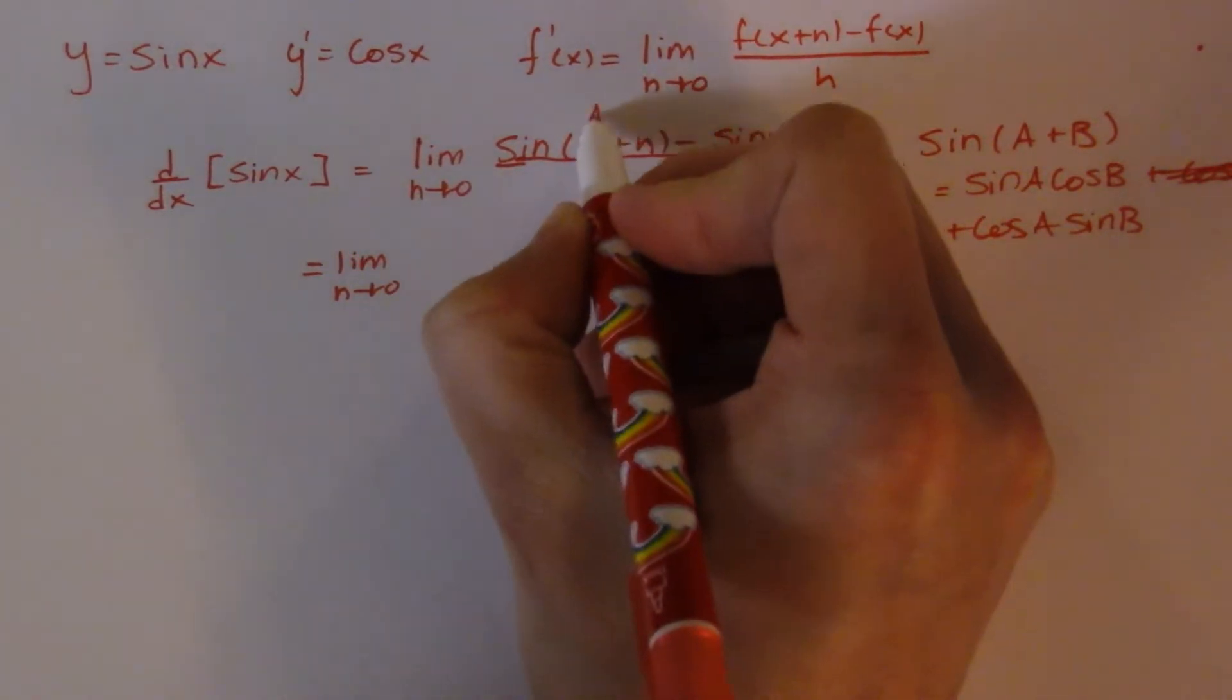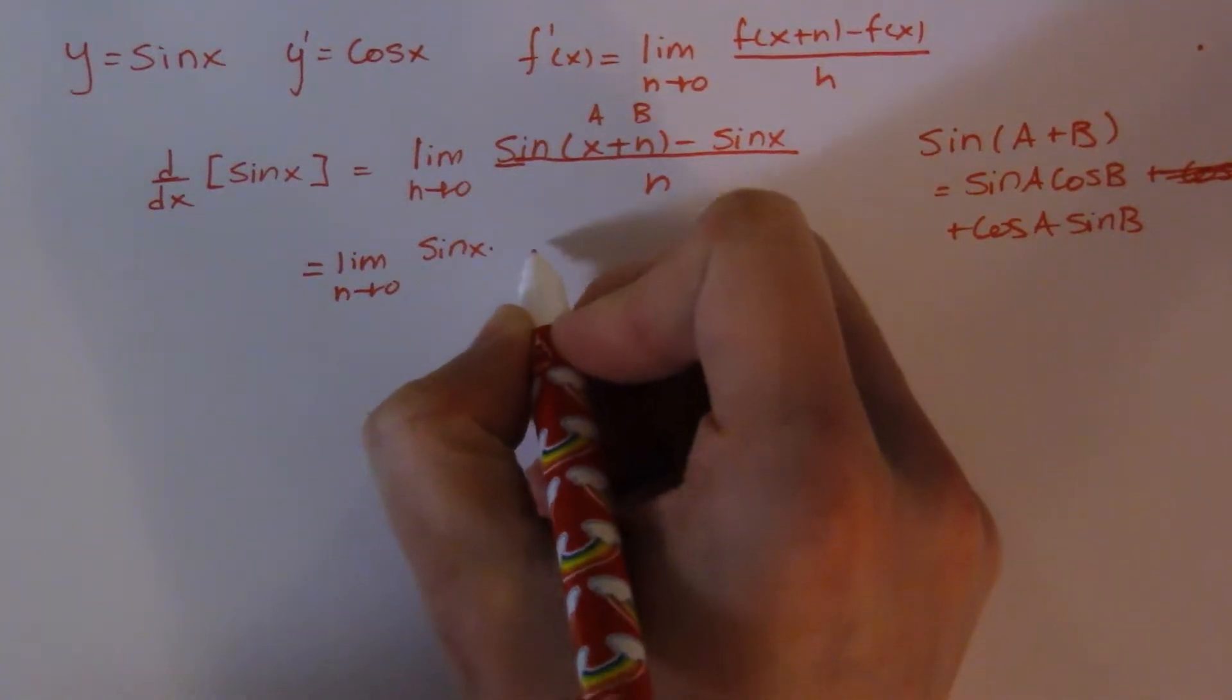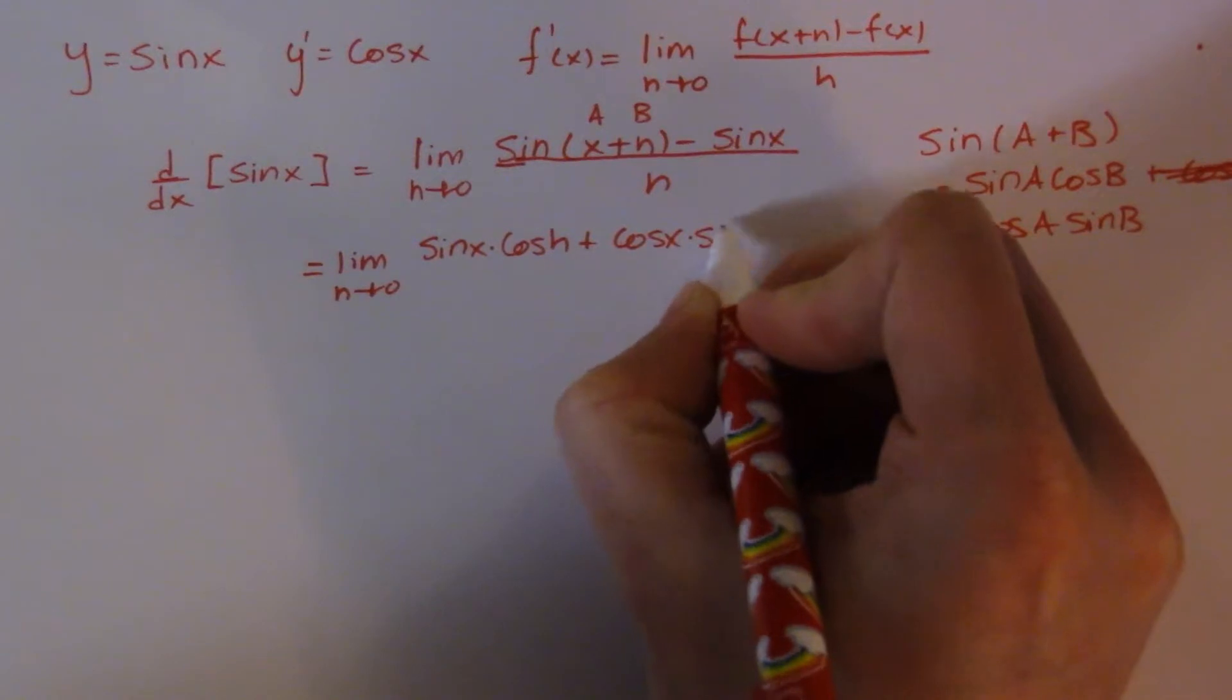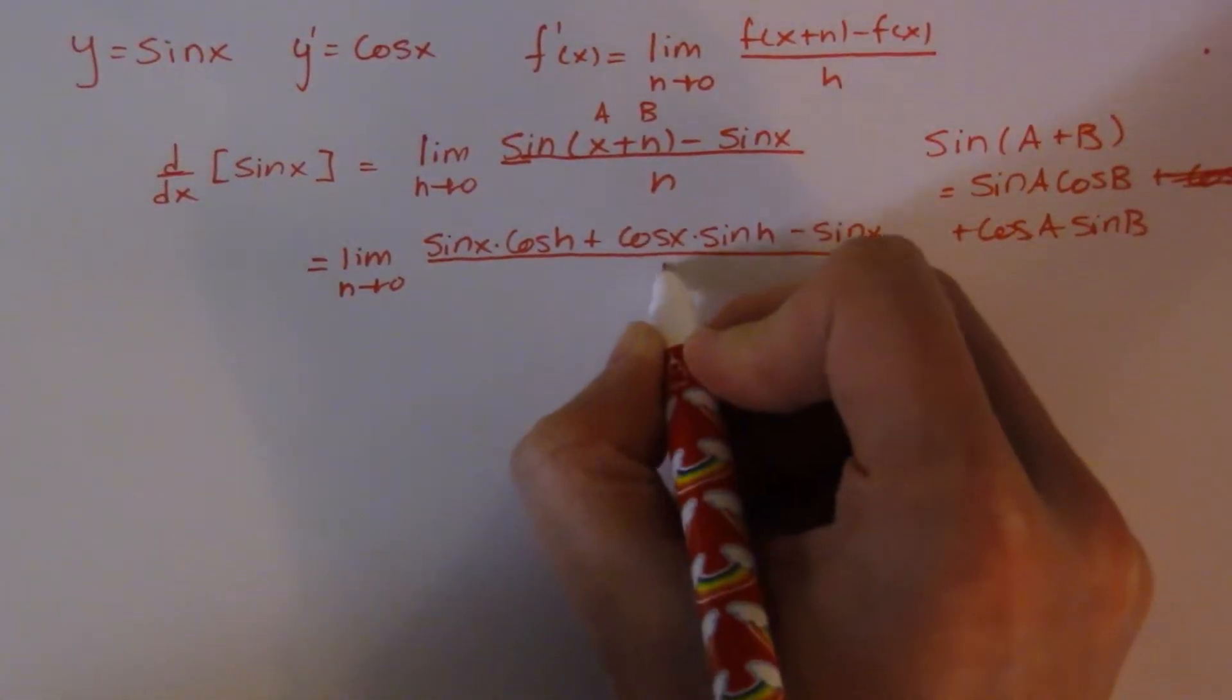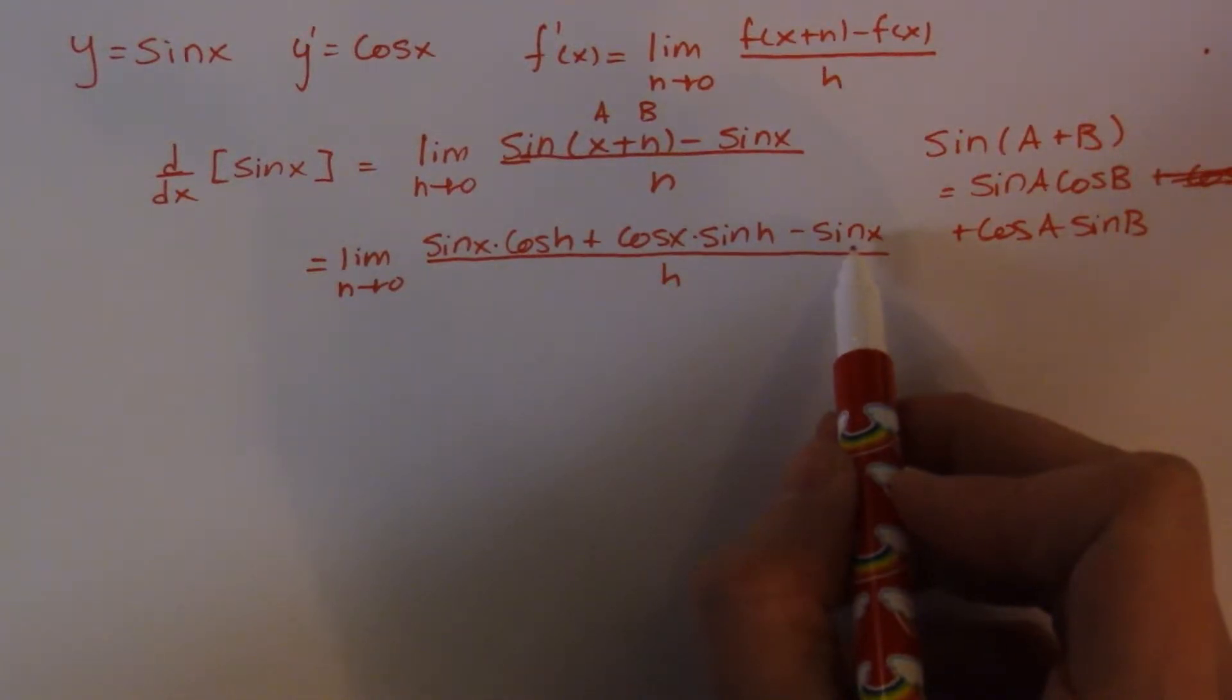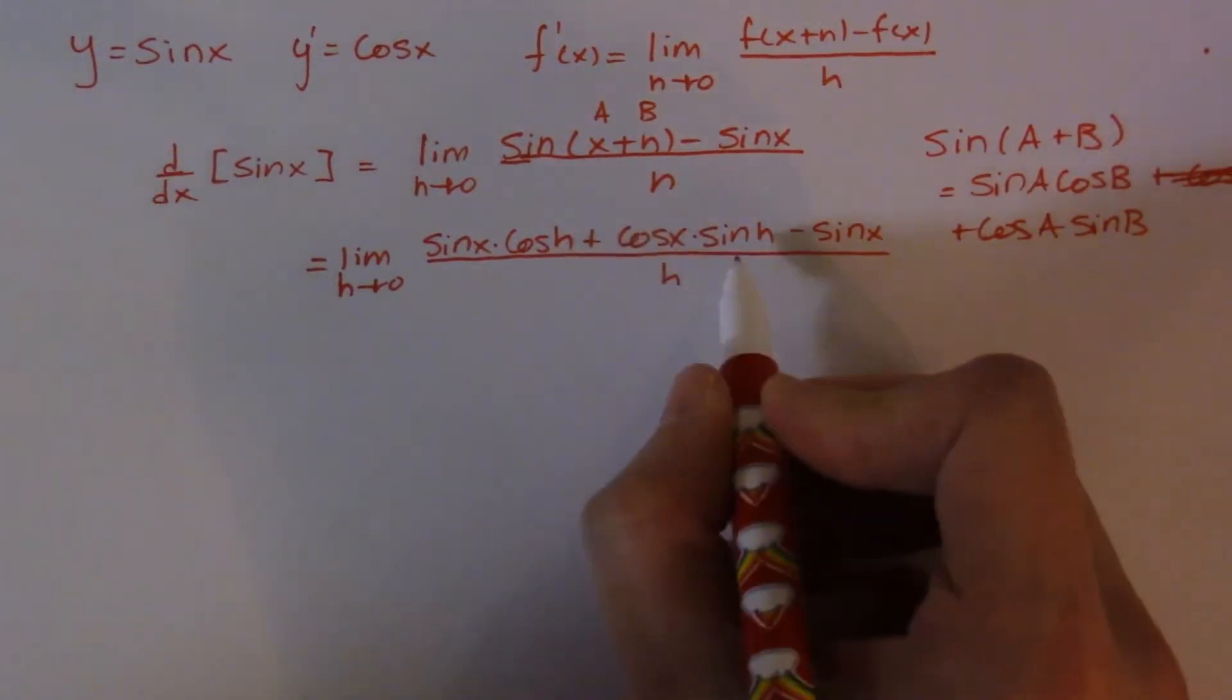This guy becomes, so my a is my x, and my h is my b. So I have sine of x times cos of h plus cos of x times sine of h minus sine of x all over h. It's important to remember that sine of x, cos of x, and sine of x are all essentially constants in terms of this limit, because our limit goes to h. So these are not going to change once we evaluate. We're really concentrating on cos of h and sine of h.